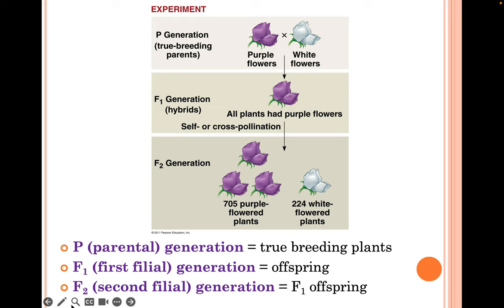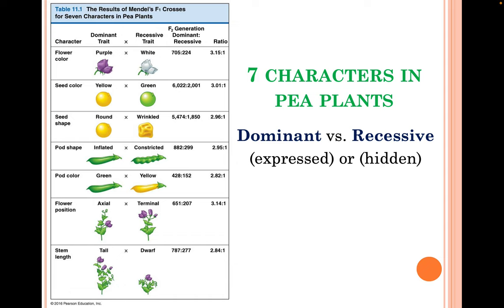You should be familiar with these terms. There were actually seven characteristics in pea plants that Mendel studied: flower color, seed color, seed shape, pod shape, pod color, flower position, and stem length. These traits were all either dominant or recessive — one column shows all the dominant traits, and the other column shows all the recessive traits.